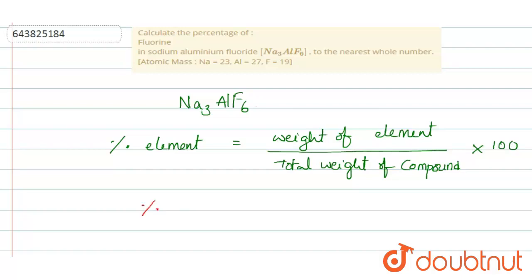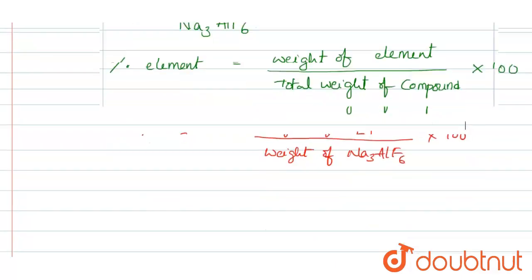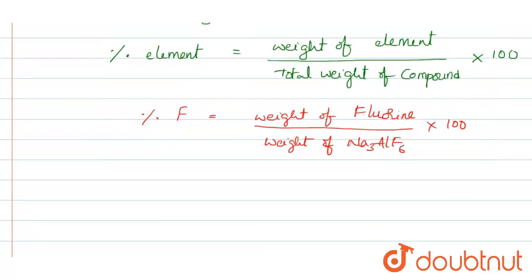Percentage of fluorine is weight of fluorine by weight of Na3AlF6 into 100. So I have to calculate the weight of Na3AlF6 first.